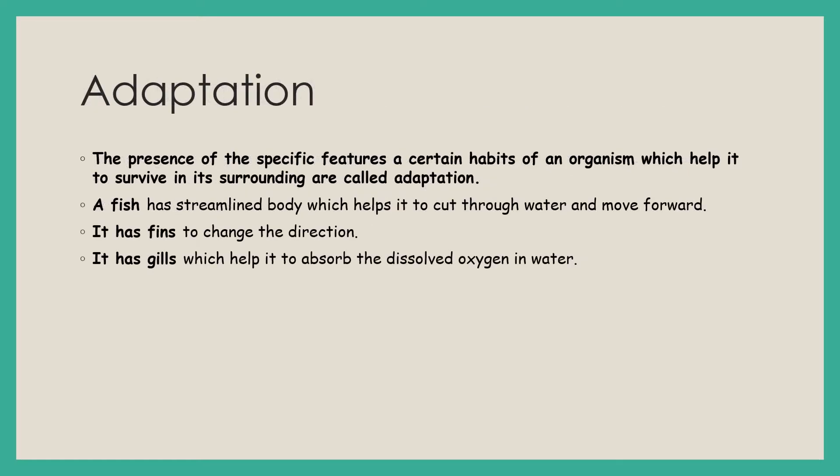Now in order to survive, organisms have developed certain body features. The specific features or certain habits developed inside the organism allow it to survive in different climatic conditions. Like a fish, it can survive in water and all its requirements are fulfilled there. Its body is streamlined, and the streamlined body allows the fish to travel through water and move forward.